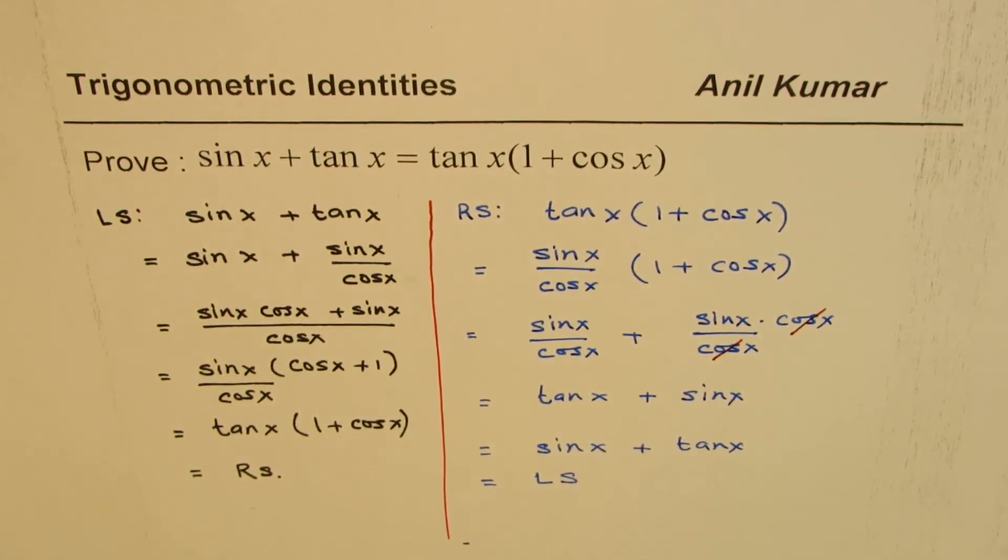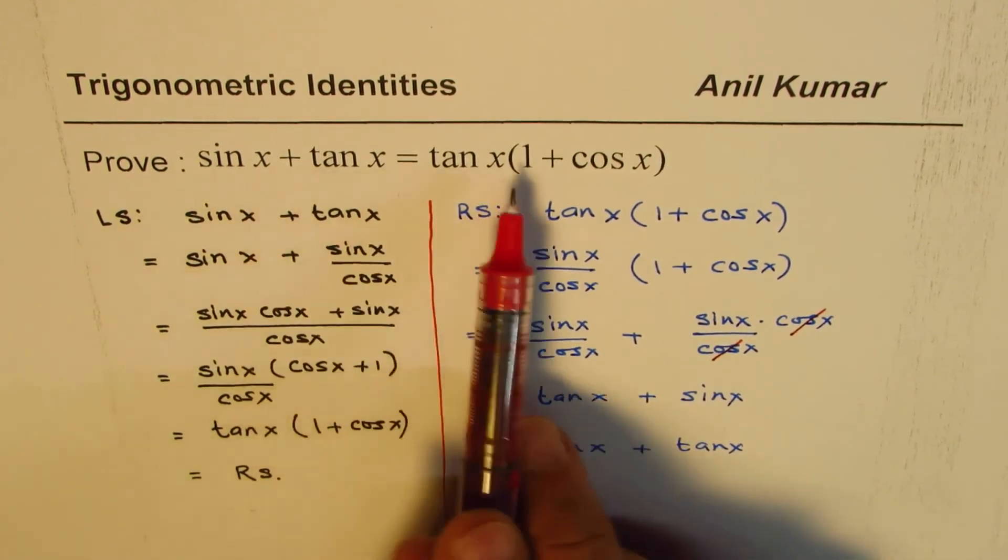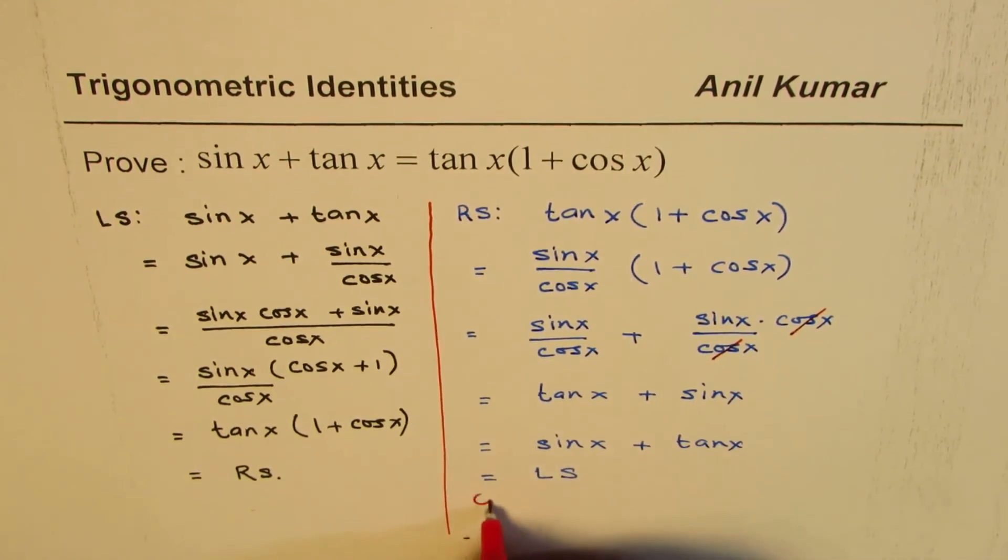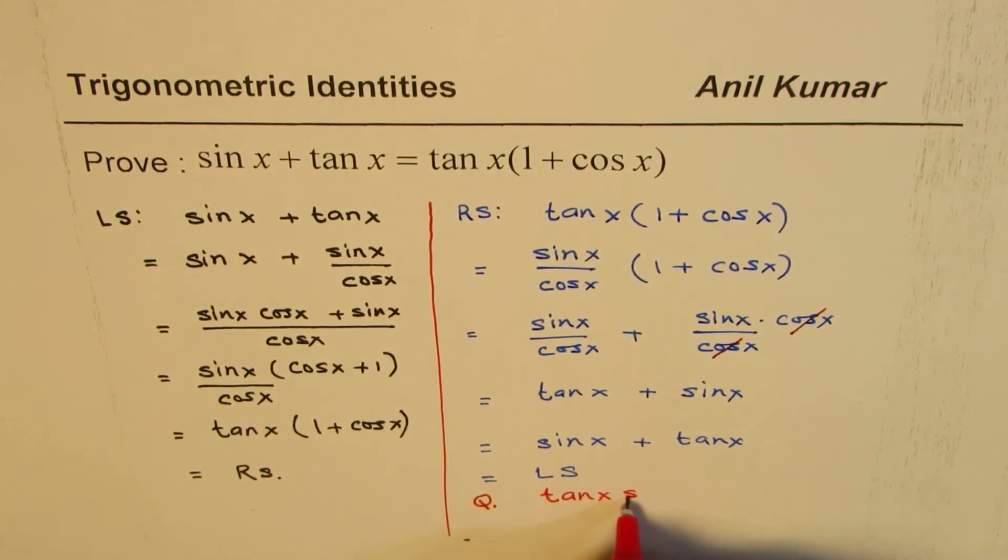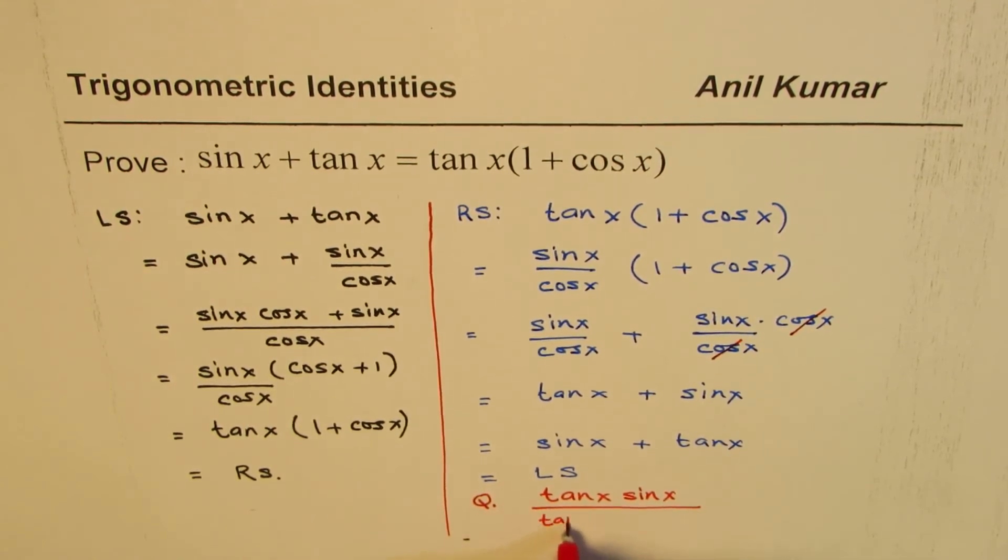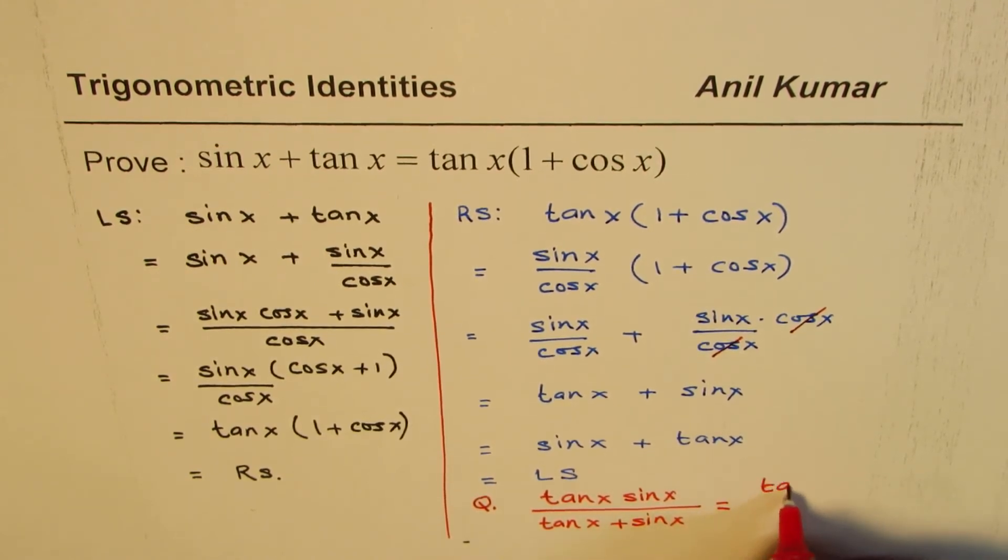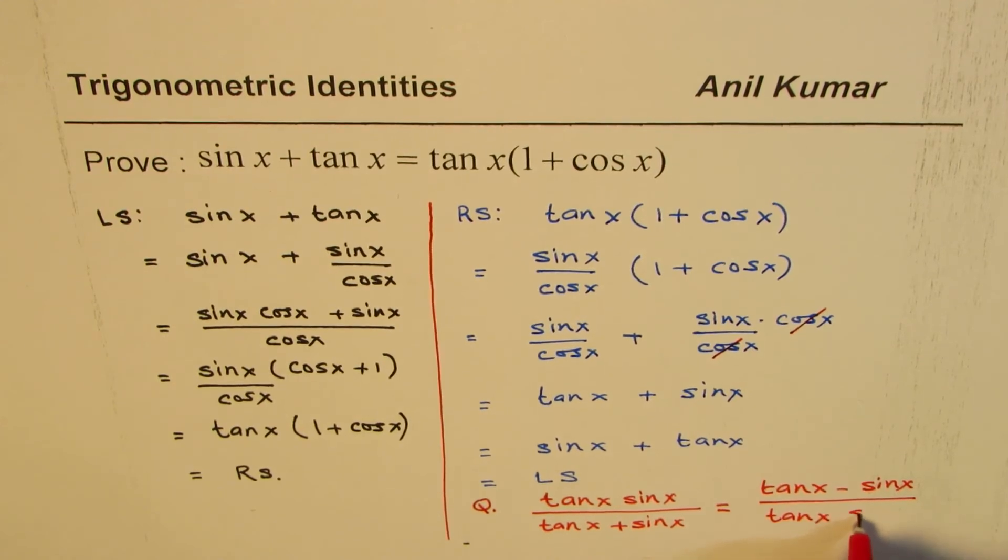Now why did I take this up? My target is to prove another identity which may utilize the strategy which you have discussed here. And the question for you is this. The question which we want to prove here is an identity which is tan x sin x divided by tan x plus sin x equals tan x minus sin x over tan x sin x.